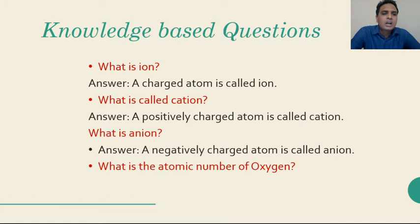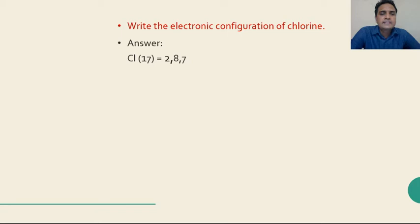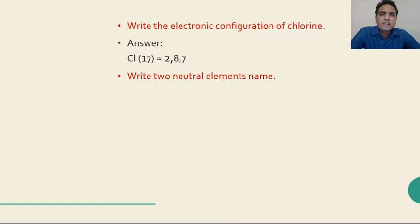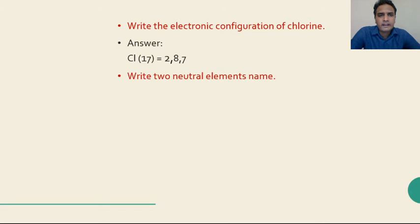Next question: what is the atomic number of Oxygen? The atomic number of Oxygen is 8. Now, write the electronic configuration of Chlorine. We know that Chlorine has 17 electrons, so we can write that 2, 8 and 7. First orbit can contain maximum 2 electrons, second orbit maximum 8 electrons, and third orbit 7 electrons for Chlorine — giving us 2, 8, 7.